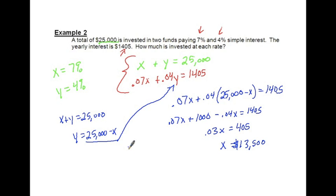Move over your 1,000, that's 405. Divide both sides, you get X equals 13,500. Remember the X is the 7% one. So in the 7%, I put in a total of 13,500. So in my 4%, remember the two values have to add up to 25,000.